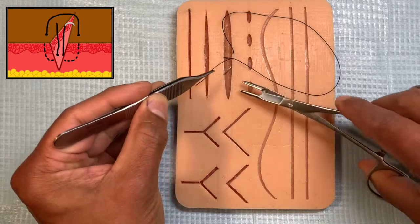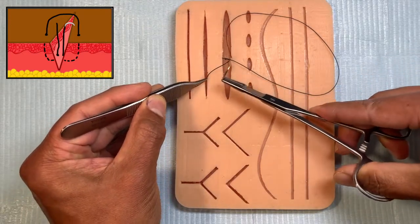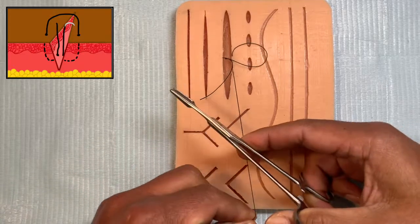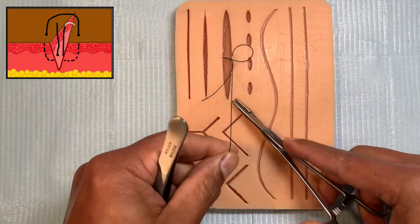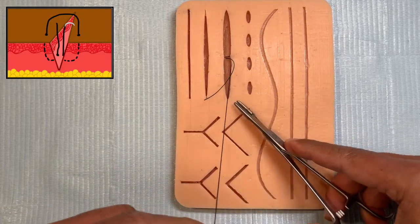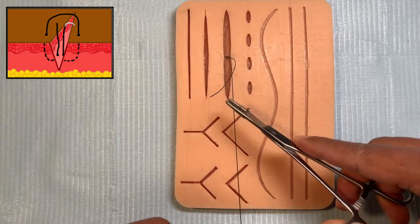So when you do this you keep the shorter end towards you because this should be sitting on the same side as where you're going to tie. So now we've got a shorter end and a longer end.